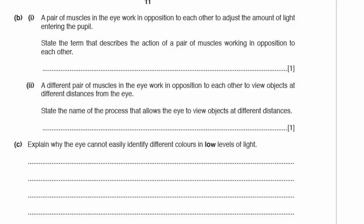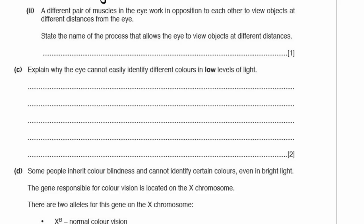A pair of muscles in the eye work in opposition to each other to adjust the amount of light entering the pupil. The term that describes muscles working in opposition to each other is antagonistic muscles — just like the bicep and tricep. The process that allows the eye to view objects at different distances is called accommodation.